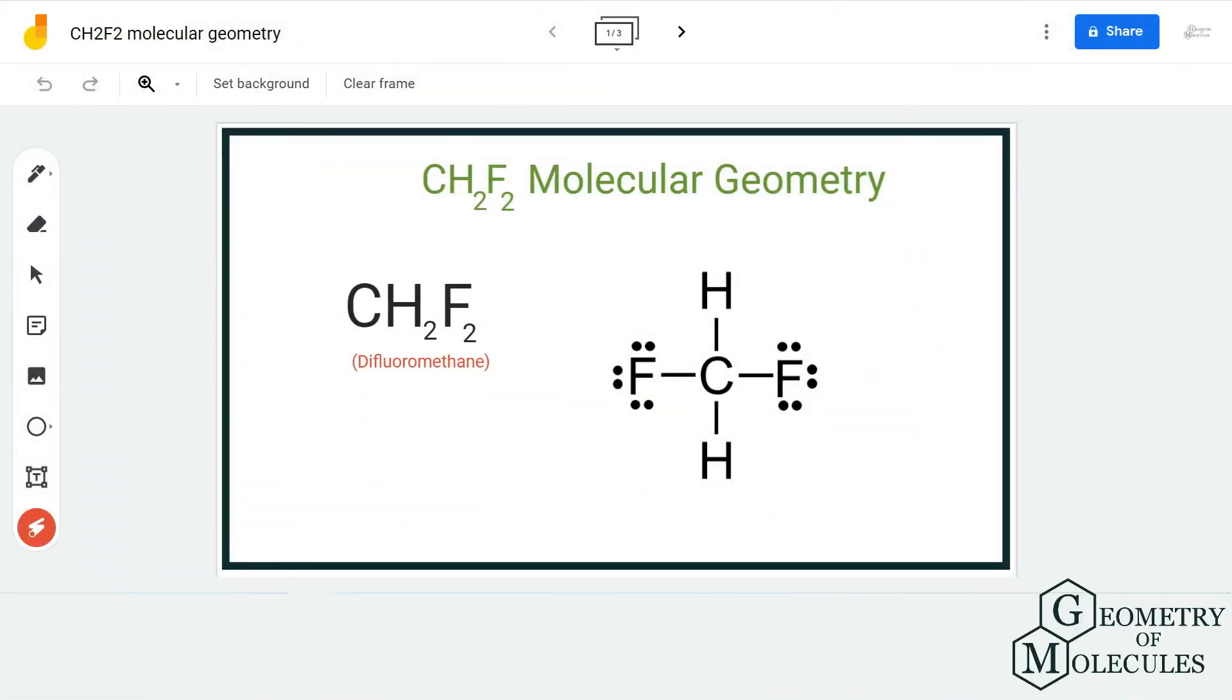Hi guys, welcome back to our channel. In today's video we are going to help you determine the molecular geometry of CH2F2 molecule. It's the chemical formula for difluoromethane, and to determine its molecular geometry we are first going to look at its Lewis structure.